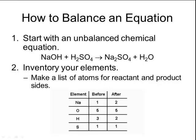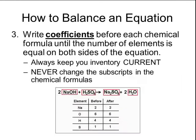To make an inventory, make a list of all the atoms involved in the reaction, then count how many atoms are present on the reactant side before the reaction and how many are present on the product side after. By looking at this inventory table, you can tell if your equation is not balanced. Then begin placing coefficients before the chemical formulas until the number of elements on each side are equal. It's important to keep your inventory current as you add coefficients, and to never change any subscripts in the chemical formula — only add whole number coefficients before each formula.